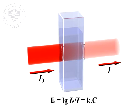This linear dependence is called Beer-Lambert law, and it is used to determine substance concentrations.